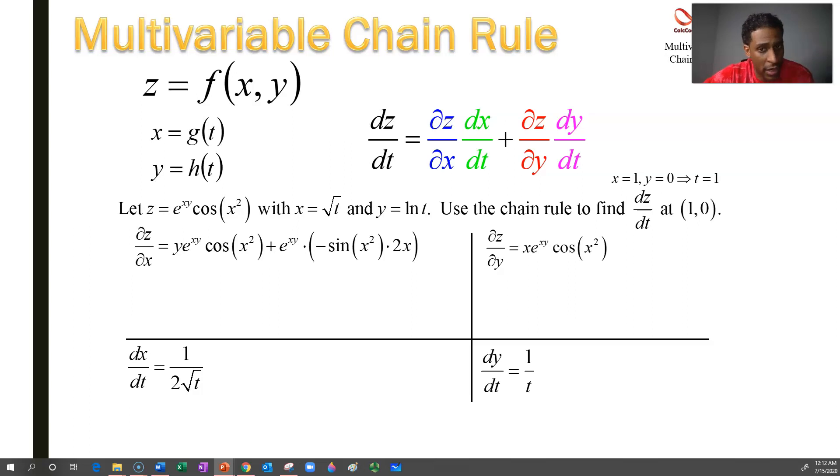The natural log of 1 is 0. The square root of 1 is 1. So you have to figure out the t because that's what goes into the bottom derivatives, the inside derivatives, the single variable derivatives, and then 1 and 0 for x and y go into the partial derivatives.